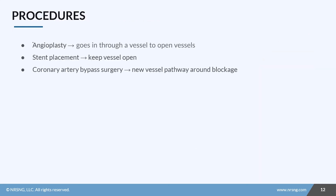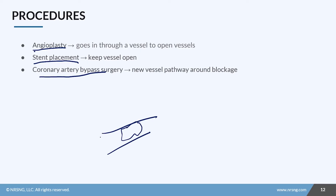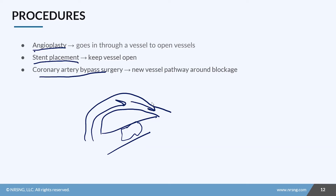Different procedures include angioplasty, where they go in through the vessel to open the vessels leading to the heart. A stent placement keeps that vessel open using a metal stent. Coronary artery bypass surgery bypasses the blockage by creating another pathway around it so blood can get through. Check out the lesson titled 'MI Surgical Intervention' for more information on these procedures.